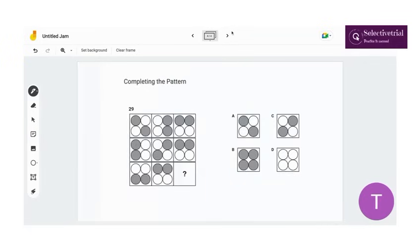And in the second question we have completing the pattern. And the way to approach this question is to look at the pattern vertically and then horizontally. If we look vertically we can see that these circles interchange shades. So it would be in the top and then the bottom and you have to look at some patterns.